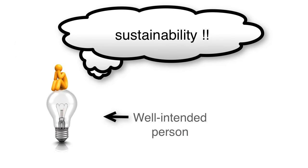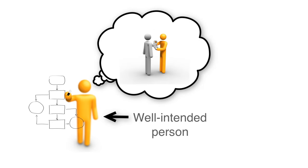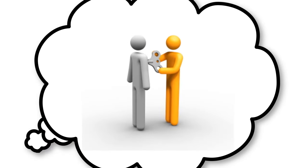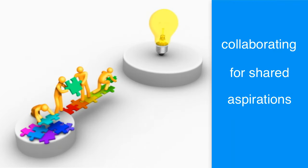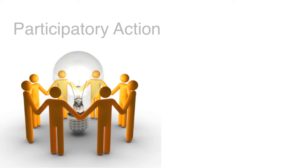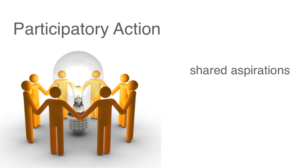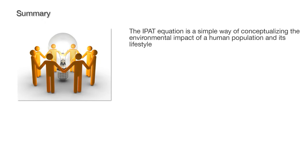One of the dangers of viewing the system this way is assuming that people are objects that can be manipulated to produce a desired sustainable effect — in this scenario, the designer is using people to achieve an outcome. An alternative is to create partnerships where people can work together to choose their shared destiny. Participatory action methods of design are in the spirit of creating shared outcomes through individually and collectively chosen actions.